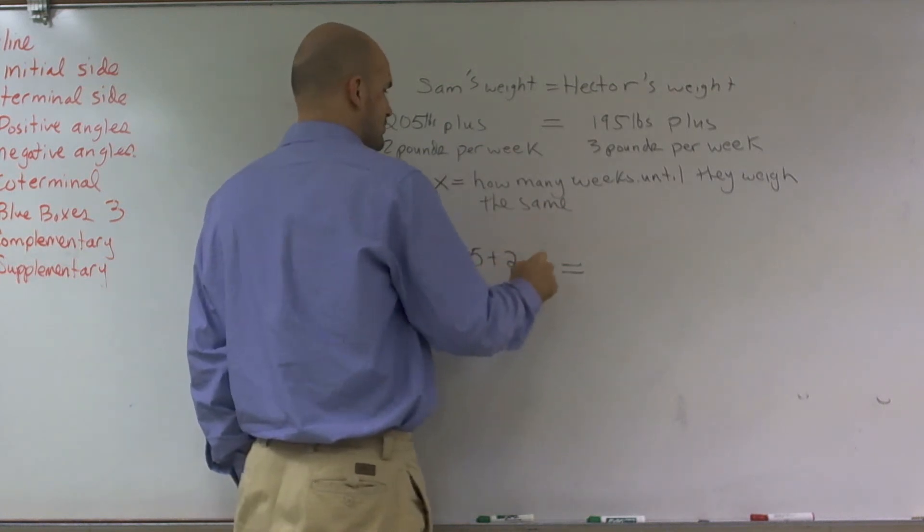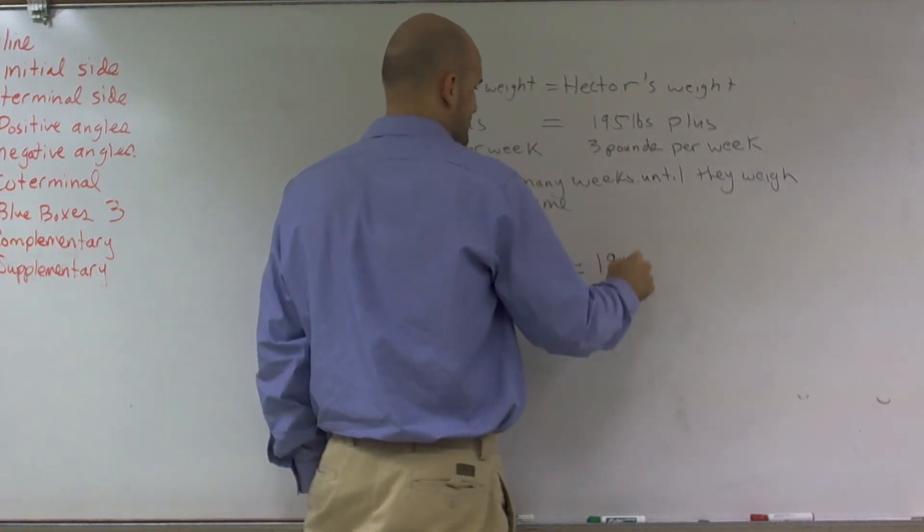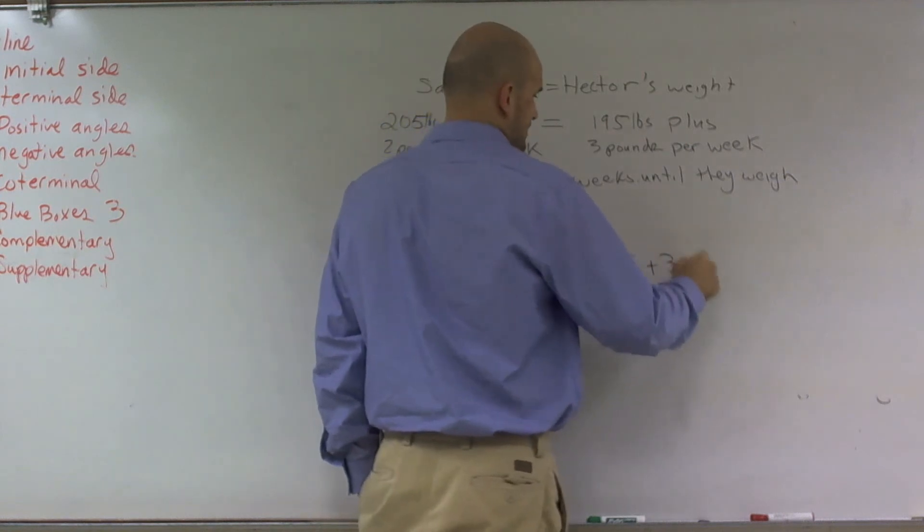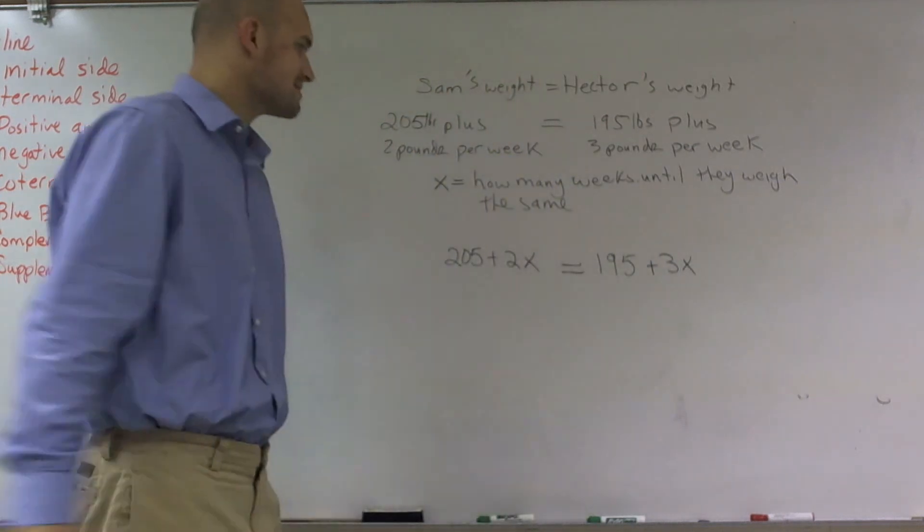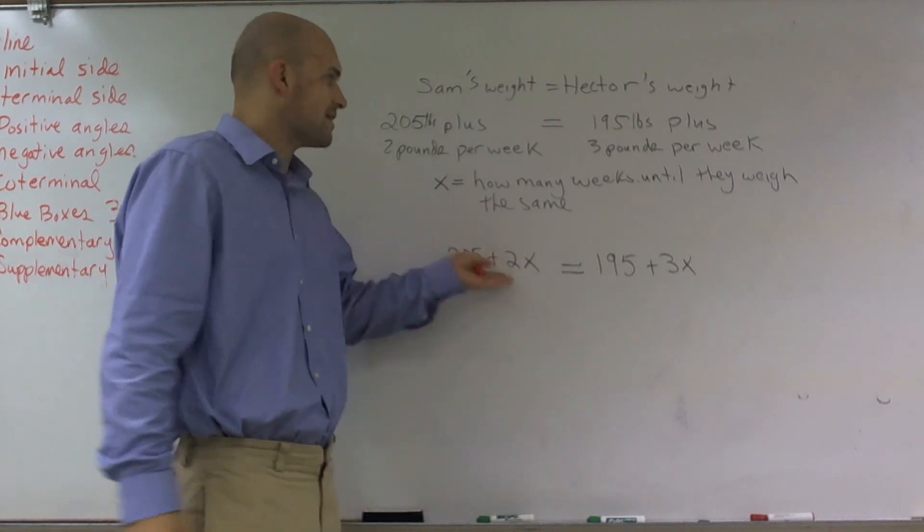And Hector weighs 195 pounds and he gains three pounds per week. So X is the number of weeks. When I solve for X, that's going to tell me how many weeks it's going to take for them to equal each other.